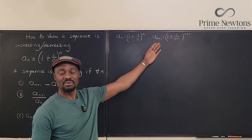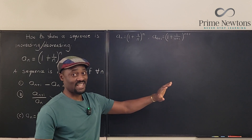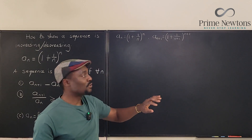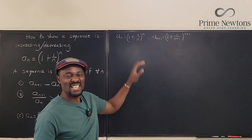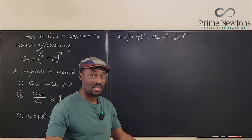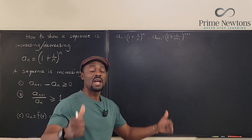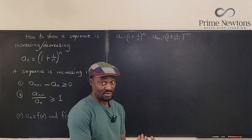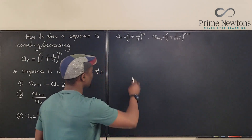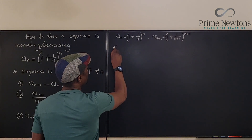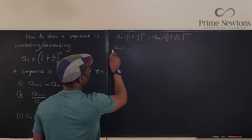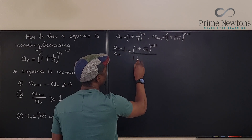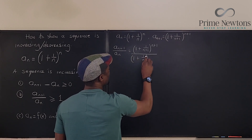Since I didn't specify what n is, this is a general and better way to show it. I'm going to divide a_{n+1} by a_n and see if the result is greater than or equal to one. Once I get a ratio greater than or equal to one, I have shown the sequence is increasing. So a_{n+1} / a_n equals (1 + 1/(n+1))^{n+1} divided by (1 + 1/n)^n.